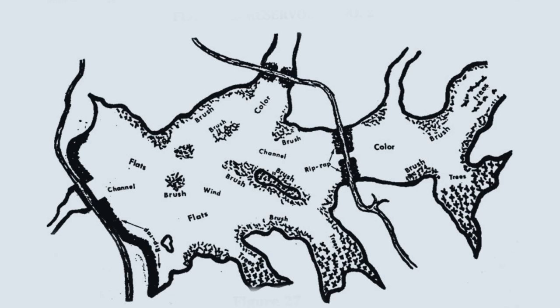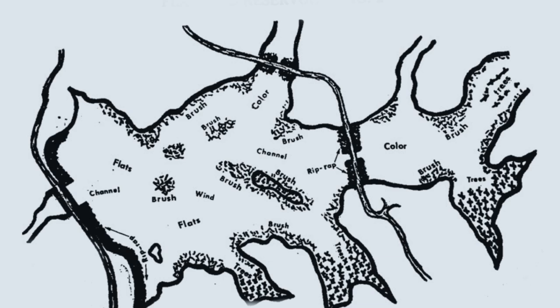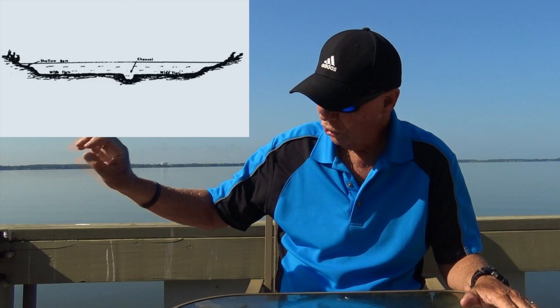First, I want to show you a top view picture of what one of these big Flatland 2s looks like. This would be a typical Flatland 2 reservoir — it could be 30,000 acres, 50,000 acres, or a 100,000-acre impoundment. I'm going to also show you a side view of what most of them look like. So as you're looking at that side view, I want to give you a few absolutes in the Flatland 2.